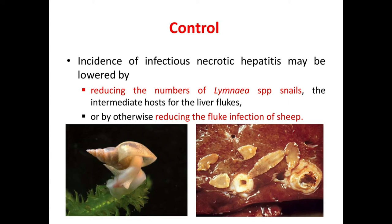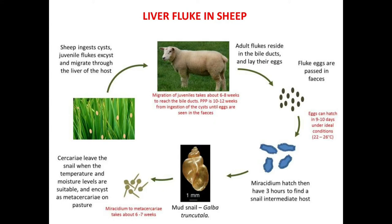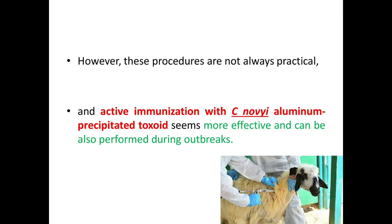You can see the picture of the Lymnaea snail here — the intermediate host of liver fluke — and the liver fluke life cycle in sheep. Sheep ingest cysts or juvenile flukes, which migrate through the liver of the host. Adult flukes reside in the bile duct and lay eggs; the fluke eggs are passed in faeces, miracidia hatch and find the snail as intermediate host. Cercariae then leave the snail when temperature and moisture levels are suitable and encyst as metacercariae on the pasture, and sheep ingest the cysts with the grass and become infected.